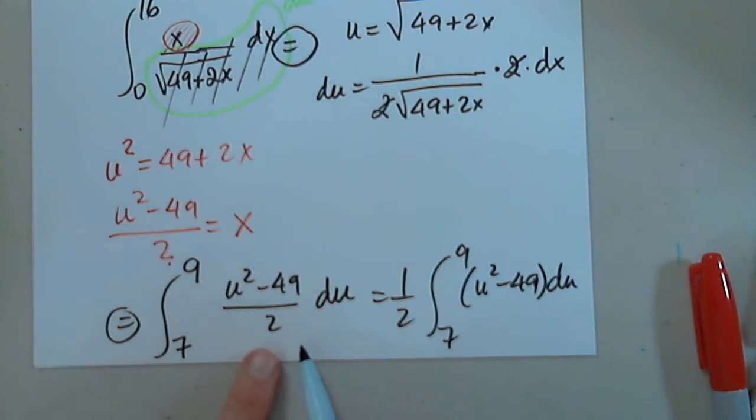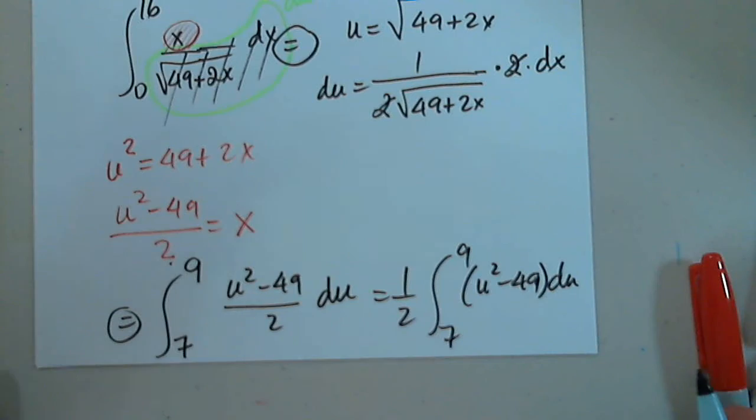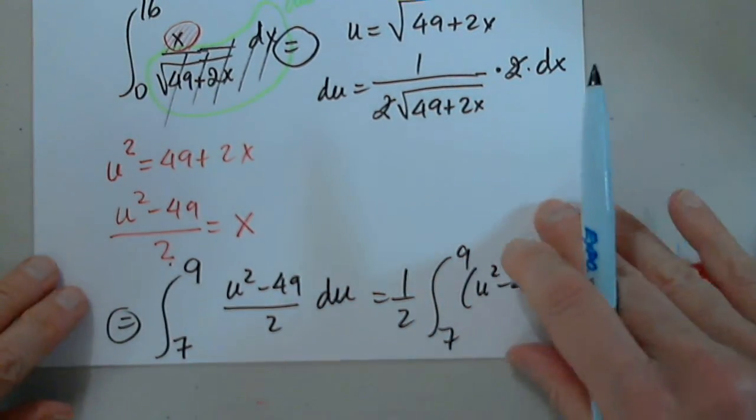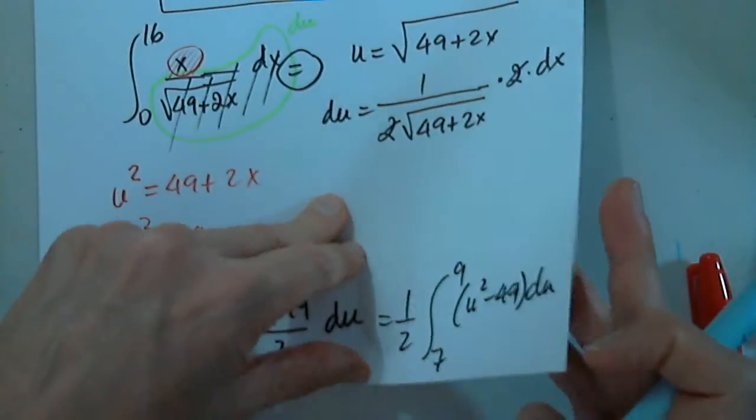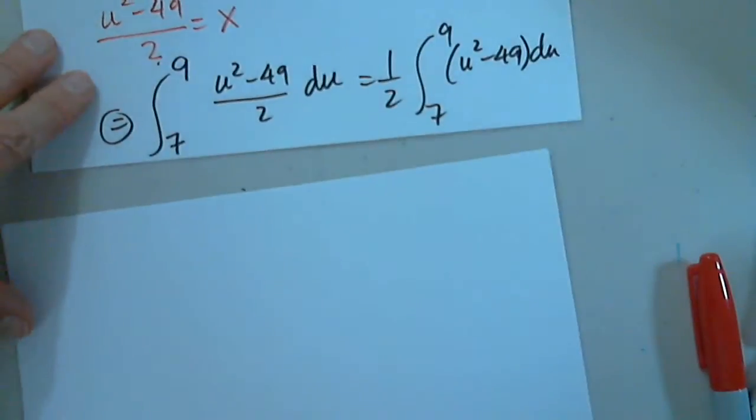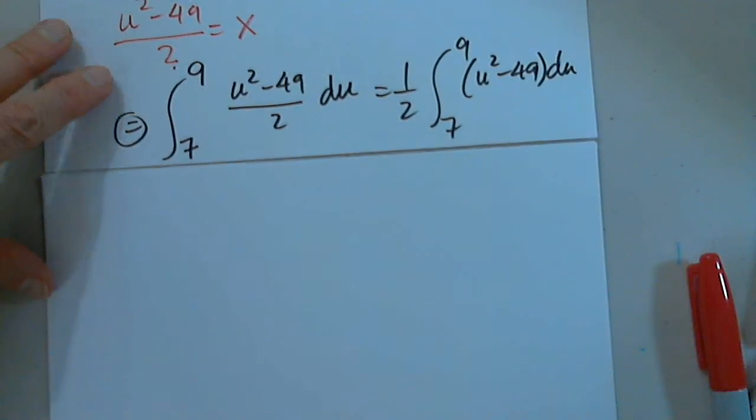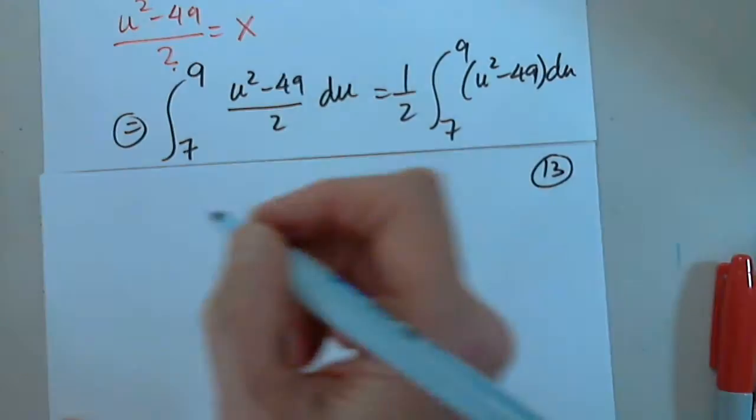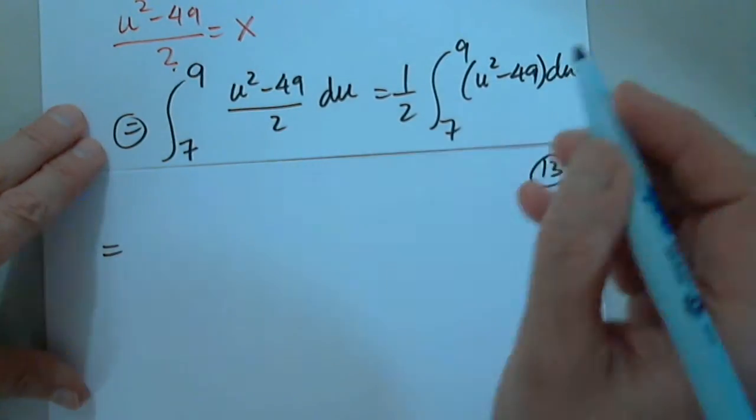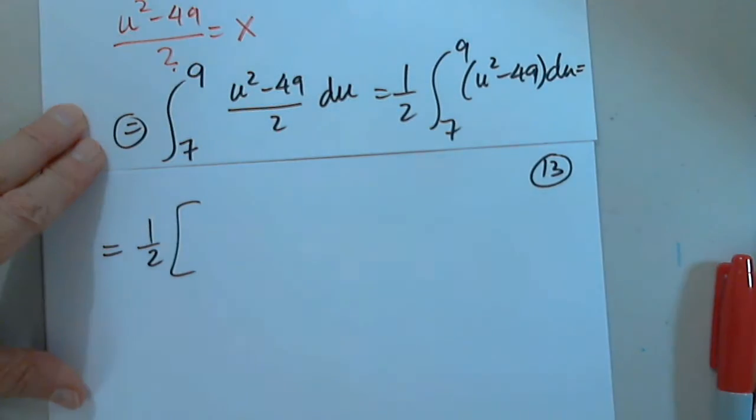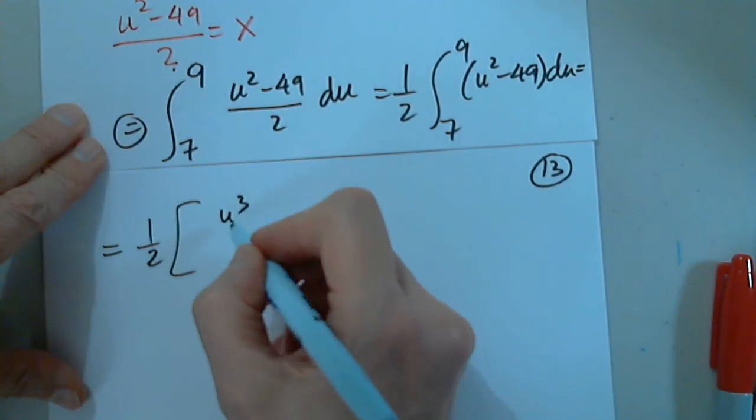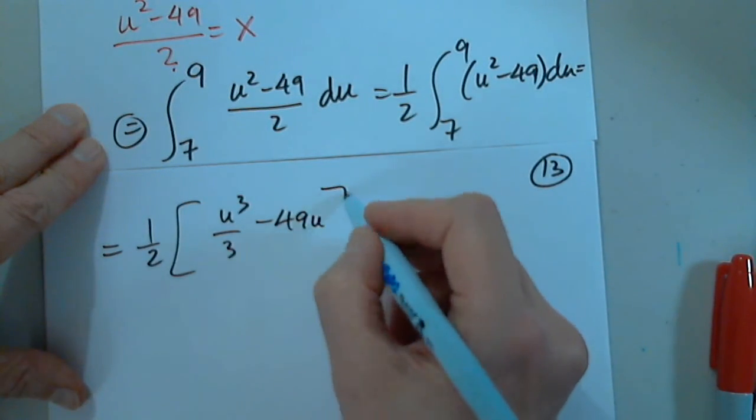This is in the way. It bothers me, and it's not going to make any difference. Take it outside. So now we proceed with u cubed over 3. So one half can wait patiently. And we have u cubed over 3 minus 49u.